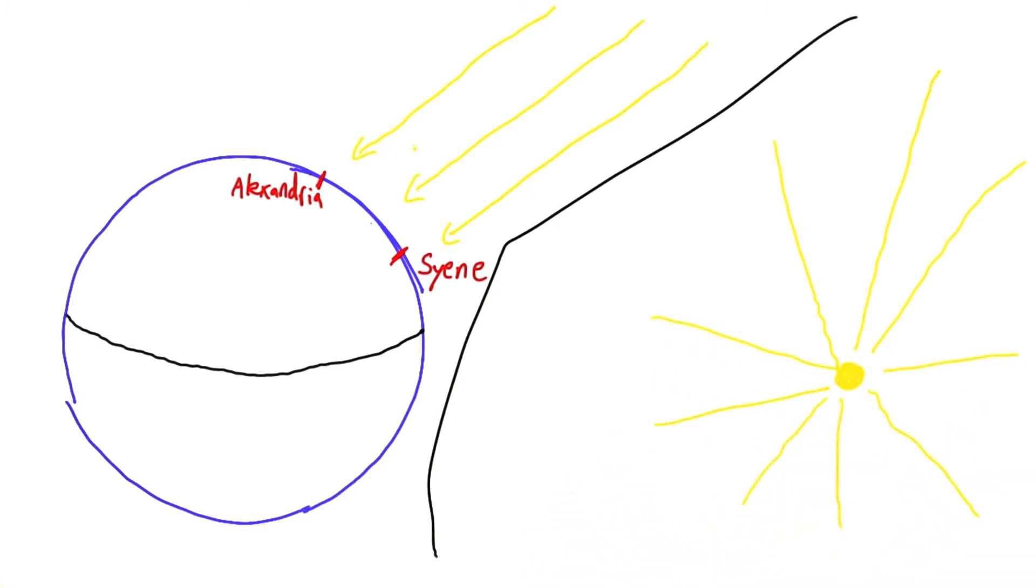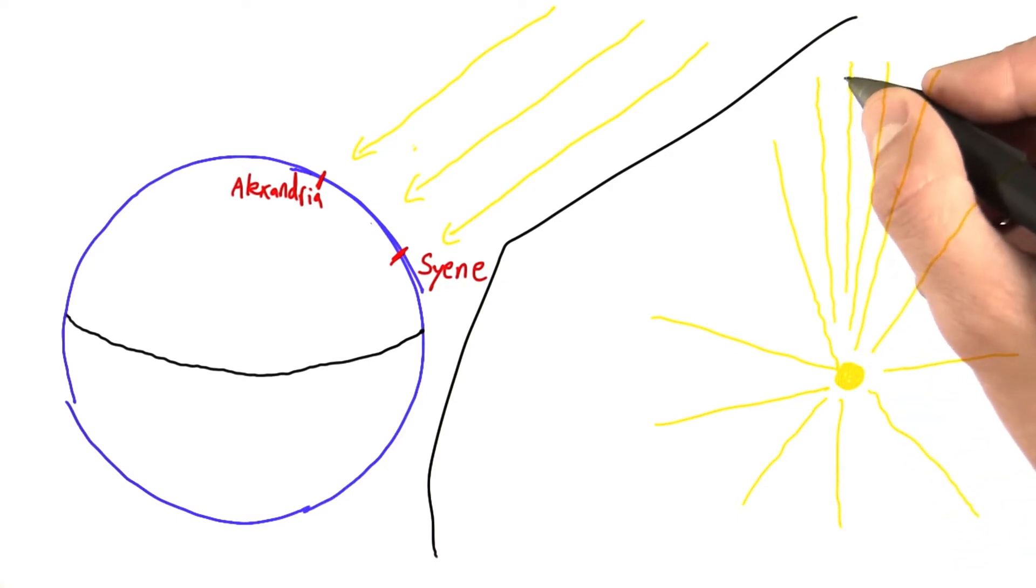What happens is we get really, really, really far away from the sun. Like, way out here. Well, we've got more rays, like this. We can start to see that if we're really far away from the sun, maybe if our earth is over here.